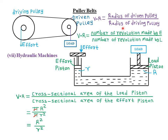The formula that you will use depends on the information provided in the question. For example, if you are given the radius of the driven pulley and the radius of the driving pulley, then velocity ratio equals the radius of the driven pulley divided by the radius of the driving pulley. But if you are given the number of revolutions made by the effort pulley and the load pulley, then velocity ratio equals revolutions of effort divided by revolutions of load.